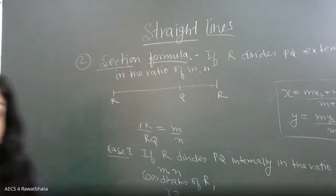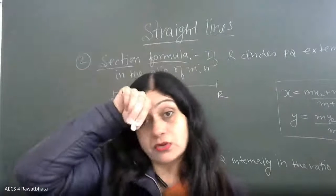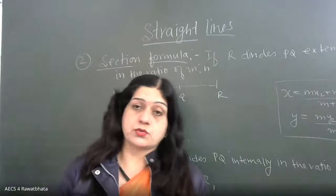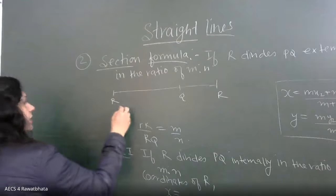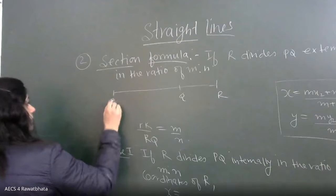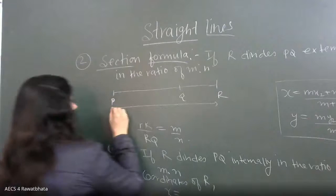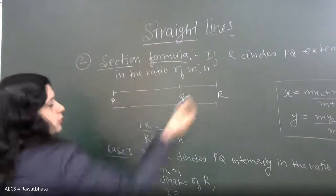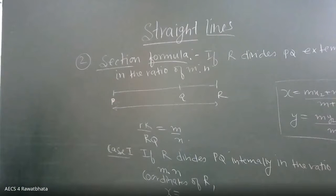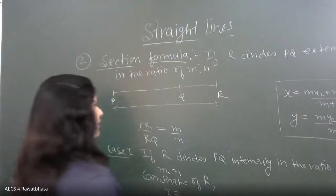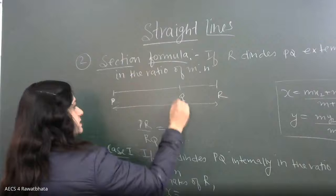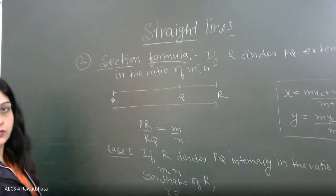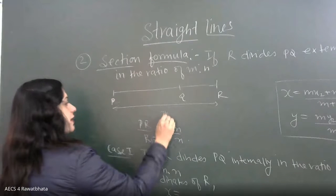Externally can it divide into some parts? Actually the point is outside, but the ratio that we take is with respect to R. Same ratio we take. In this case also, PR upon QR, that is equal to M is to N.